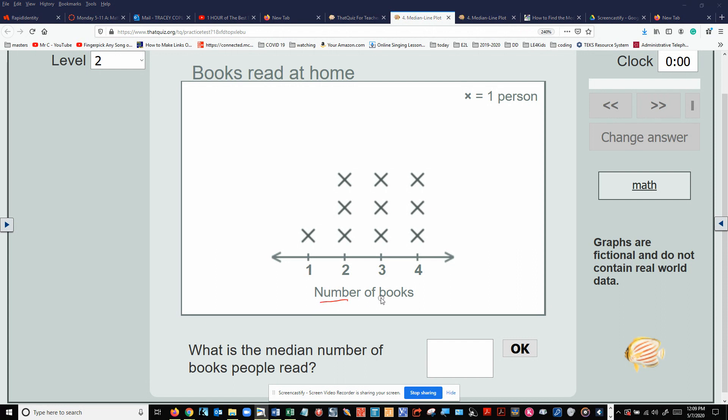Well, this is the number of books right here. These things right here is the number. Okay. What are these again right here? Well, they're people. Alright. So, what is the number of books that people read?